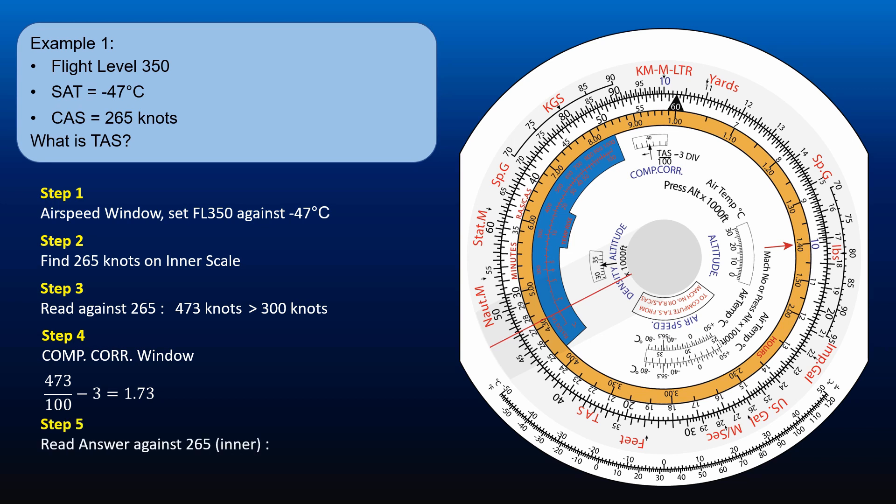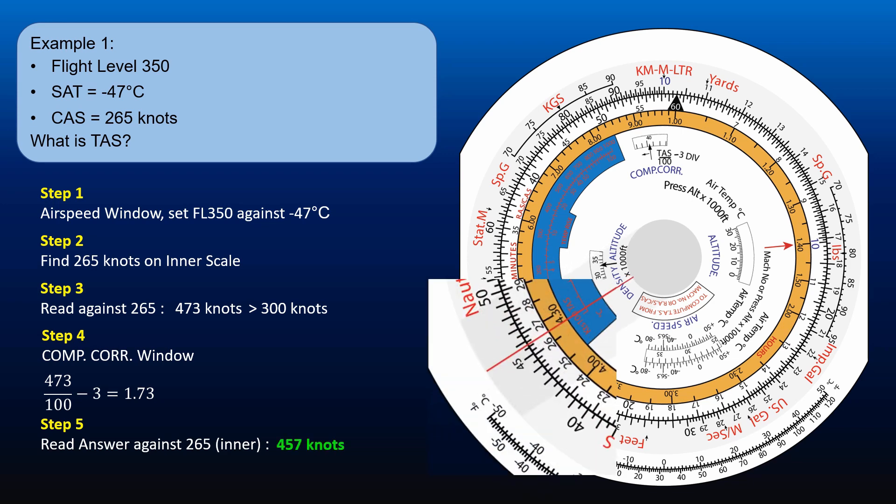Now read the new value of TAS on the outer scale, against 265 on the inner scale. The revised TAS is 457 knots. This is the final answer, and this is how you correct for compressibility error.